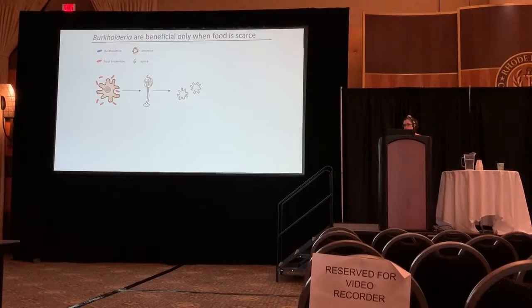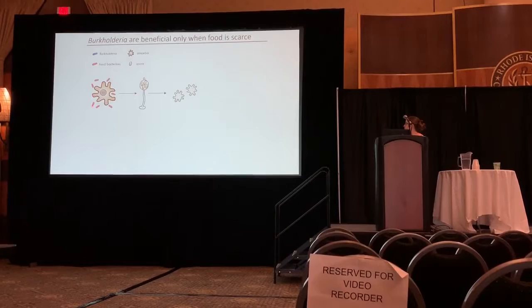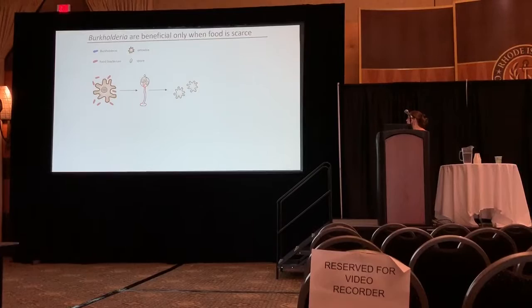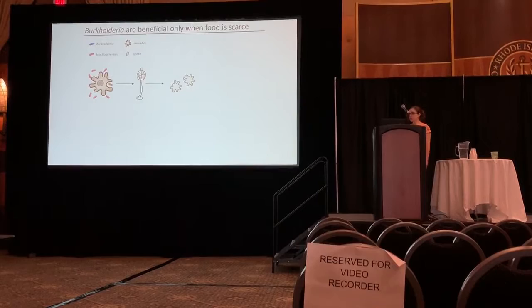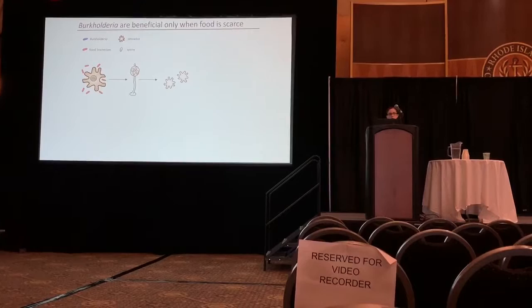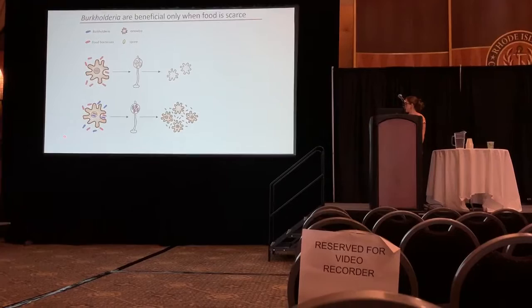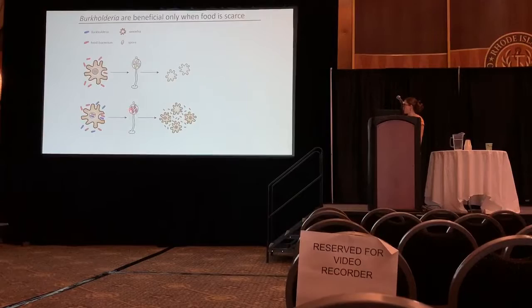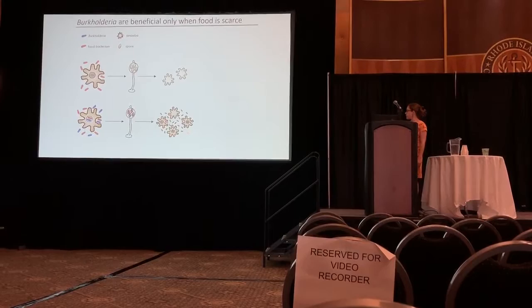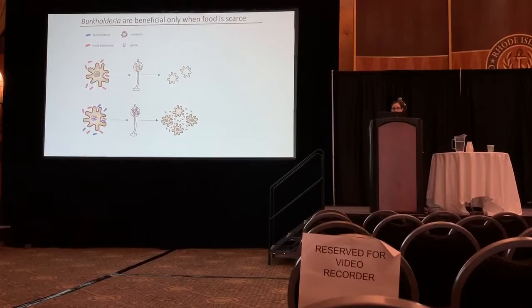The way Dictyostelium benefits from Burkholderia is that it allows it to bring snacks along with it — so in case it lands in a bad environment, it will still have some food. Without Burkholderia, the amoeba happily eats all the bacteria until it's gone, goes through its social cycle to form a fruiting body, and when those spores disperse and hatch in a new environment with no food around, they try to go through social cycles but will probably die and have very little fitness. When Burkholderia is around, it allows the amoeba to eat up most of the food but not all — the Burkholderia and food are co-packaged in the spores at the top of the fruiting body.